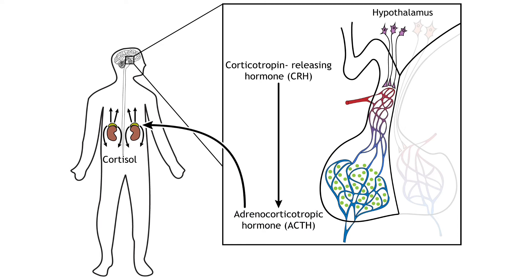The ACTH travels through the circulatory system and can act on the adrenal cortex, a gland located on top of the kidney. The adrenal cortex releases cortisol, a glucocorticoid hormone, into the bloodstream.